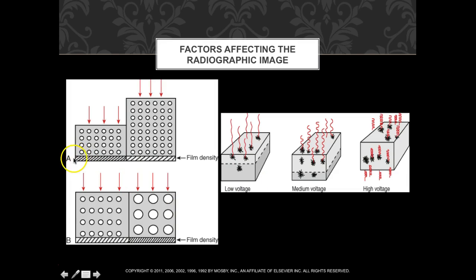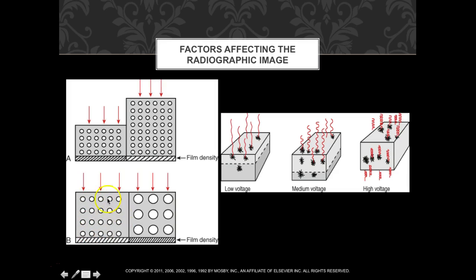Looking at film density: comparing two areas, one has much more photon exposure to the image receptor than the other. Where the part is twice as thick, you should have about half the exposure on the IR. Thicker anatomy absorbs more photons while thinner anatomy allows more photons through, giving a higher density — darker — image on the receptor.